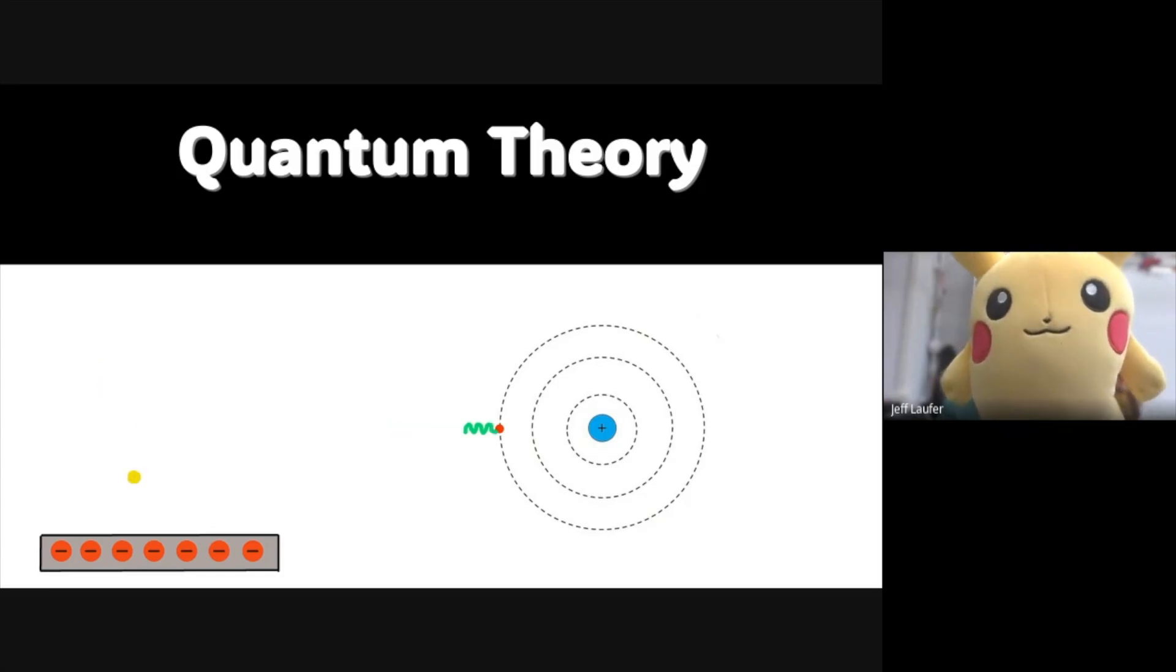In physics, classical mechanics is enough to explain most phenomena, but there are some behaviors at the atomic and subatomic level that can't be explained by classical mechanics. And that's where quantum theory comes into play.